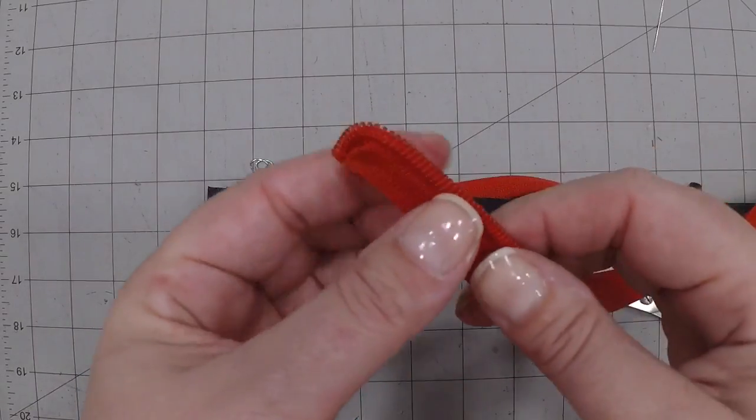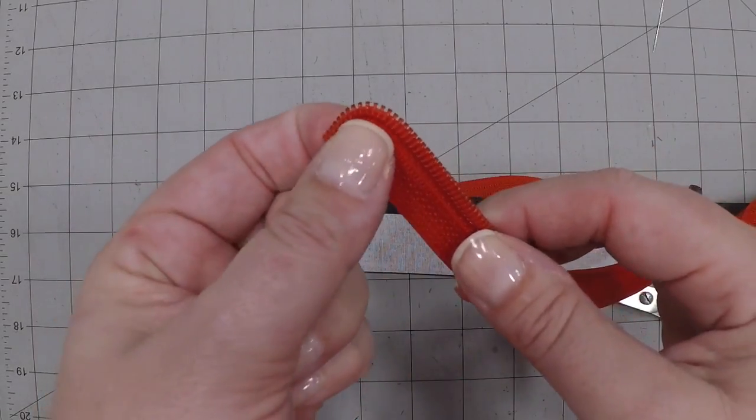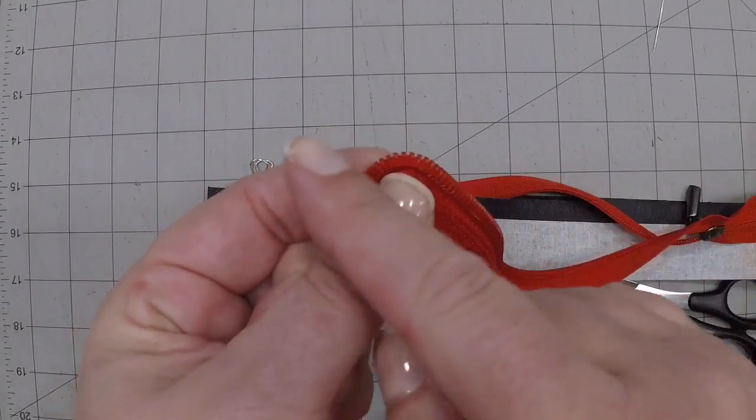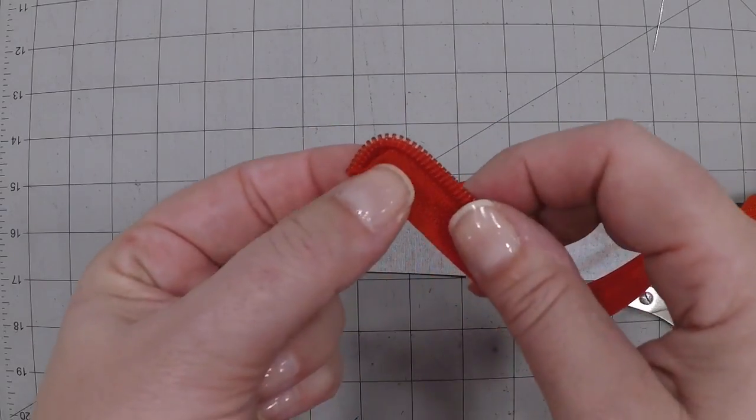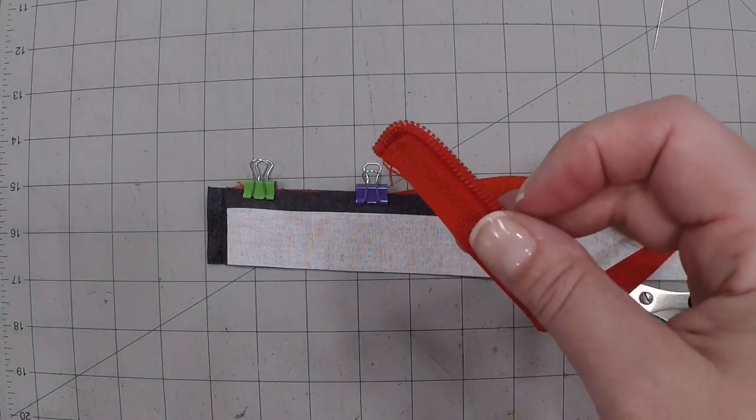That's my method of 45ing the ends so that you can get a nice finished look without using the zipper stops. Those just don't work for me at all.